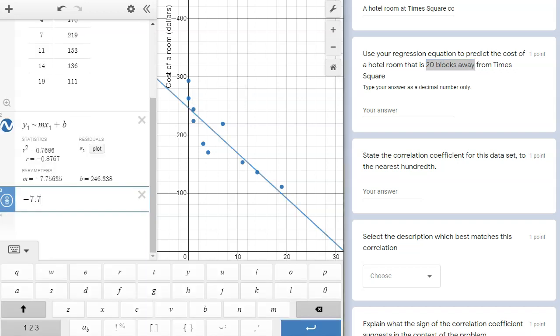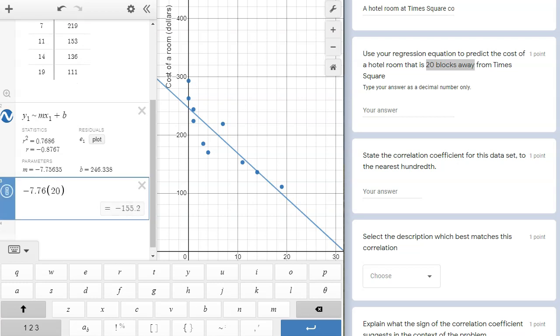I can use Desmos here to complete that calculation quickly and accurately. On line 3, I'm going to type negative 7.76 times 20 plus 246.34. At the bottom of that line on the right, Desmos will perform the calculation for me, which is $91.14. So our equation predicts that a hotel 20 blocks away from Times Square will cost $91.14.